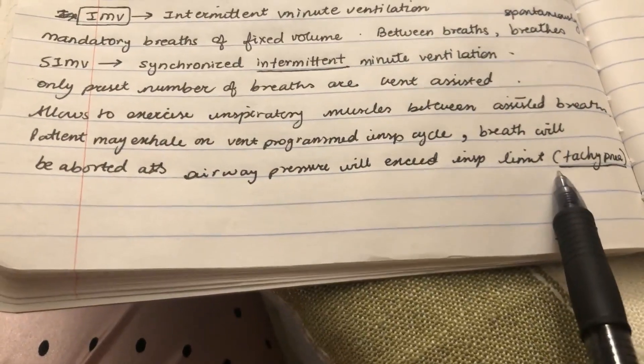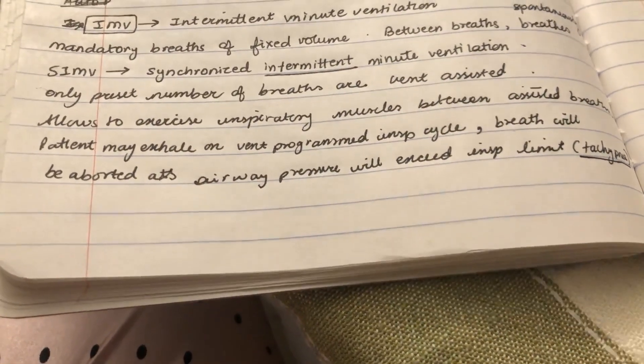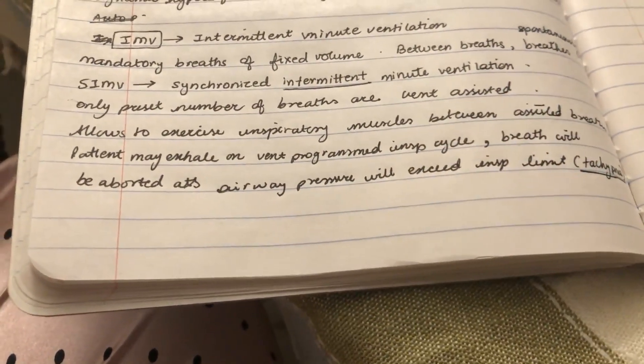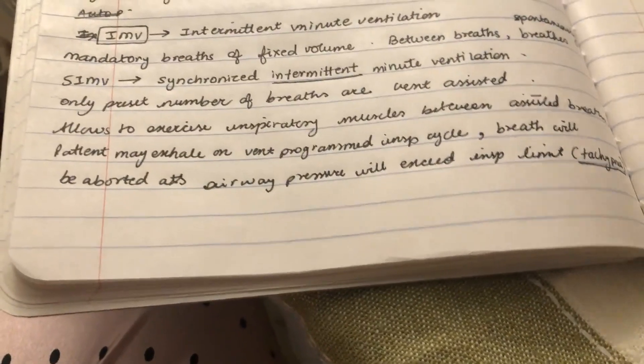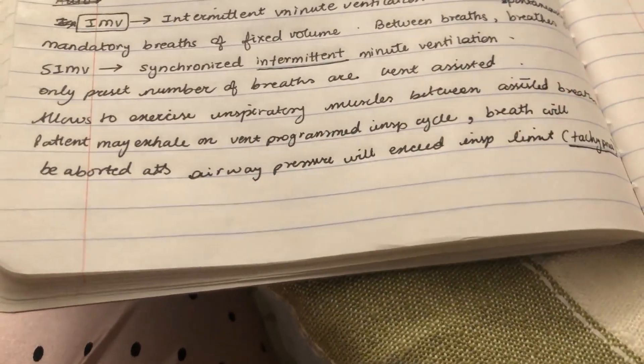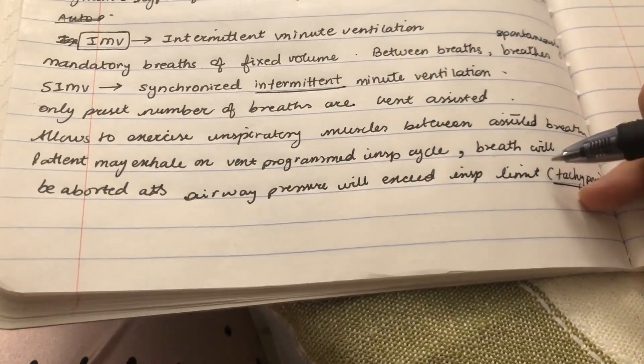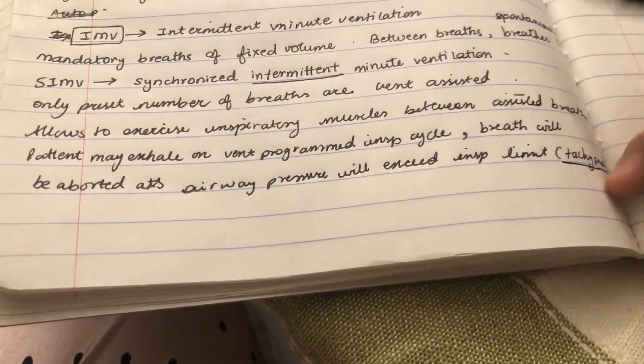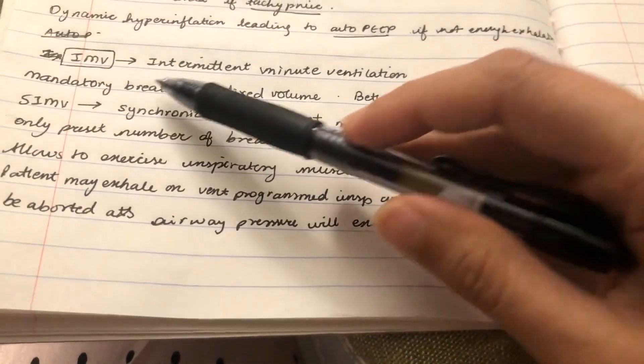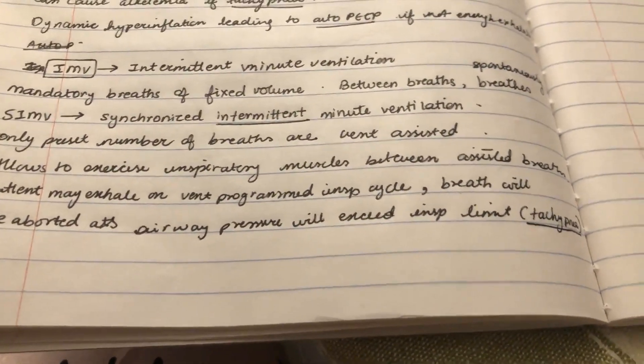Drawbacks again - tachypneic patients, if the ventilator inspiration and patient exhale are not synchronized, then pressure rises and breath drops, causing inadequate ventilation. The most common method is synchronized intermittent minute ventilation.